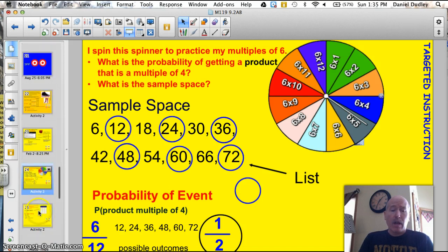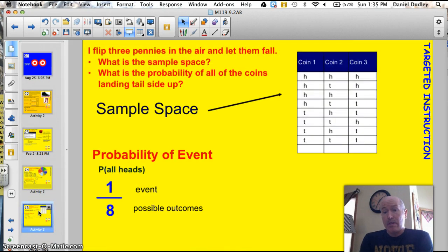Another great way to find or organize your information for a sample space is by using a table or a chart. This is often used with questions about flipping coins. So, here's a classic. I flip three pennies in the air and let them fall. What is the sample space? They want to find out what the probability of all the coins landing tail-side up or all heads. In this case here, we want the probability of all coins landing tail-side up. But, we first of all have to find the sample space. So, this is, a chart is really an organized list.